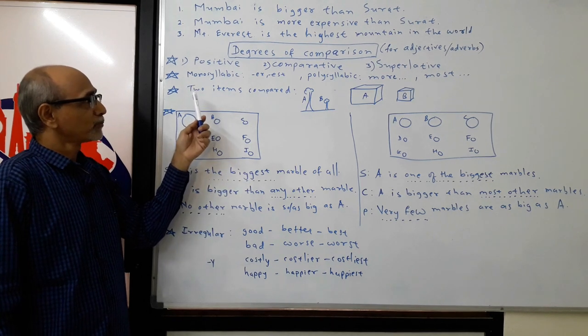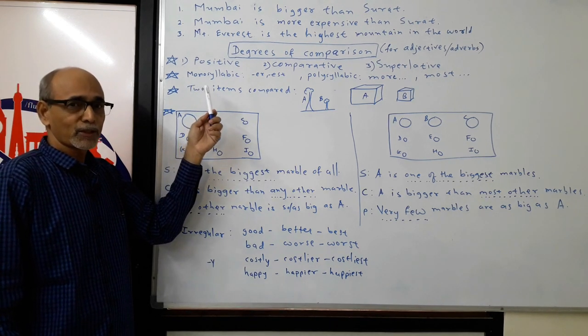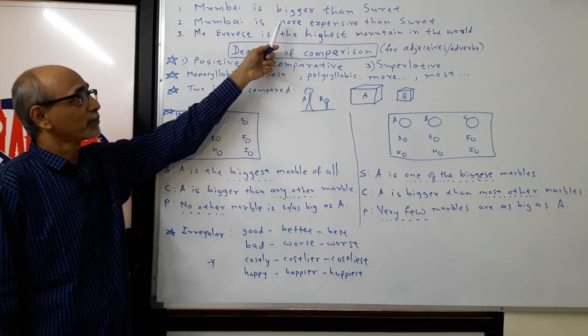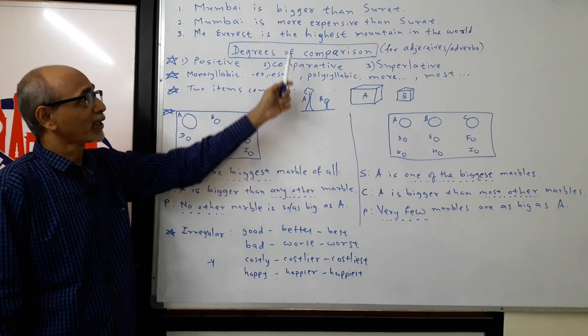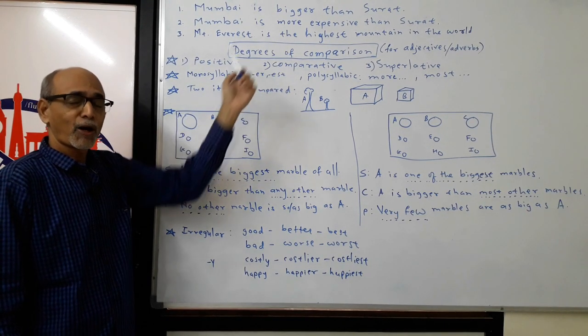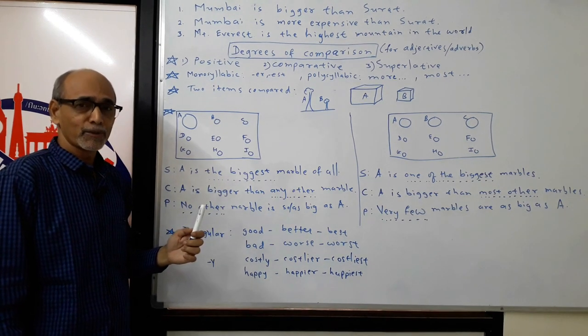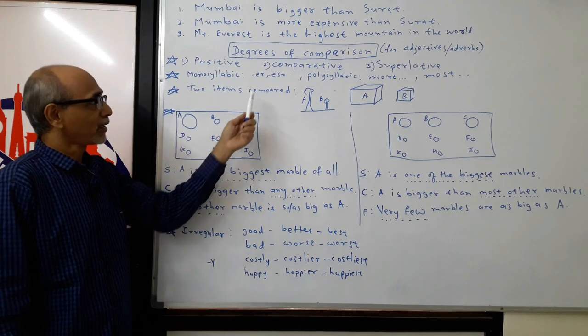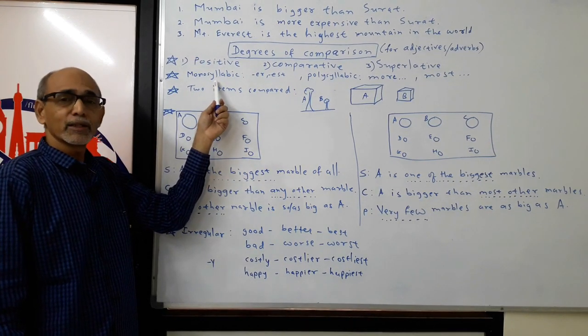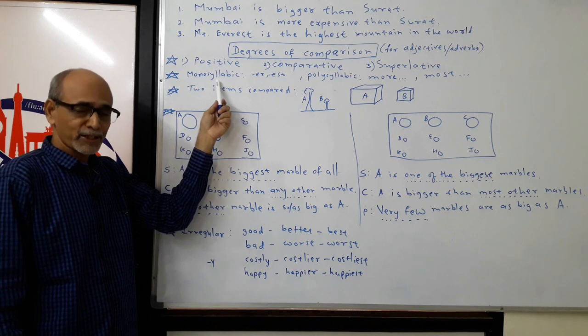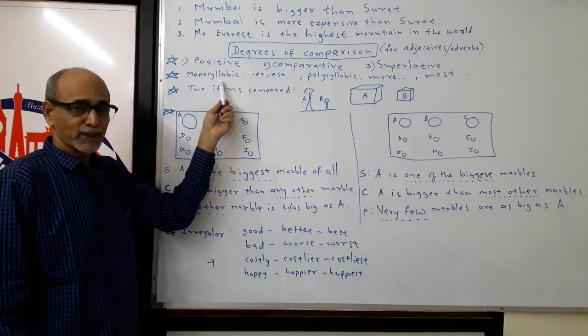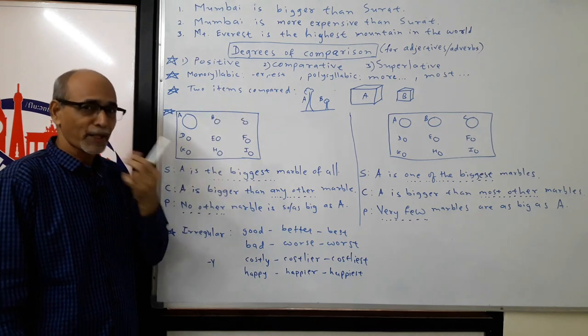Now we need to know whether an adjective requires -er and -est, like bigger and biggest, or whether it requires the words more and most. How to decide what a particular adjective or adverb requires? A very simple rule to remember is if the adjective or adverb is monosyllabic, that means it is spoken with one breath of air.